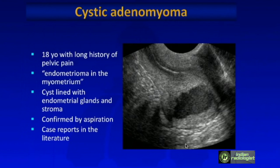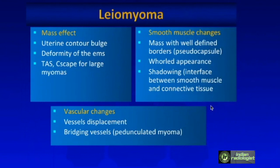This is an interesting case: a cystic adenomyoma in an 18-year-old woman with a history of pelvic pain. It looks like a cystic lesion in the myometrium resembling an endometrioma — not surprising, since it's a cyst lined with endometrial gland and stroma undergoing cyclical bleeding. This case was confirmed by aspiration; these are essentially just case reports in the literature.